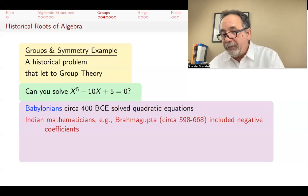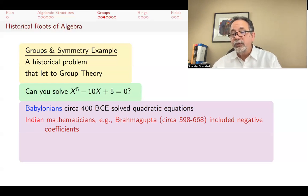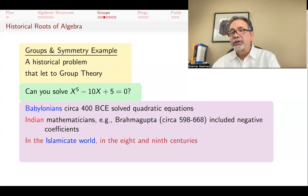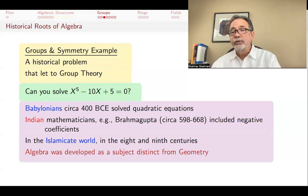Indian mathematicians, including Brahmagupta in the 7th century, did include negative quantities and solved these equations in ways very similar to ours. In the Islamic world, in the 8th and 9th century, algebra was developed as a subject distinct from geometry. Of course, algebraic problems were solved earlier, but it was in this period that algebra became its own subject.